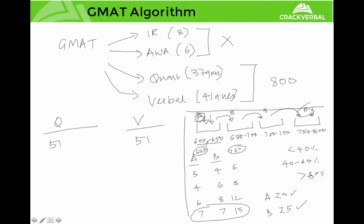Now assume that instead of buckets labeled 600, 650, etc., the scales are out of 51. In Quant you get a score out of 51 depending on how you did on those 37 questions. If you get all 37 questions right you get a perfect 51, and if you get all questions right in Verbal you get a 51 in Verbal as well.